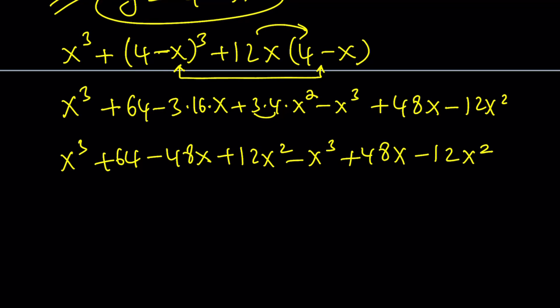Notice that x³ - x³ = 0, 48x - 48x = 0, 12x² - 12x² = 0, and the answer is 64. Remember, we were looking for a numerical value, so this should not come as a surprise. This is the first method. Let's take a look at the second method.